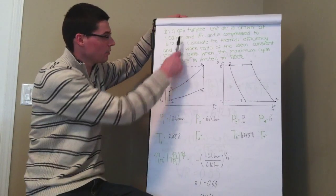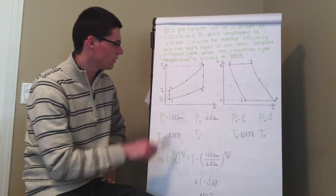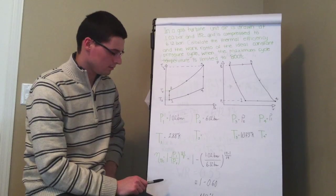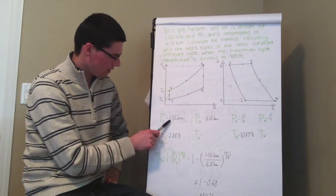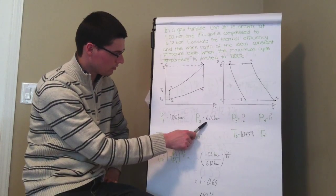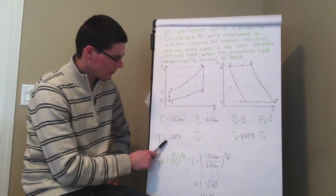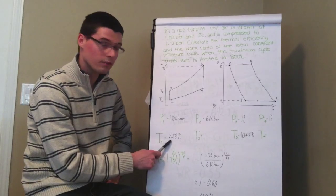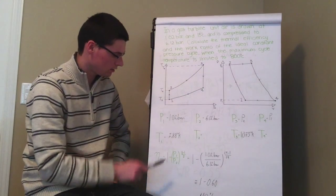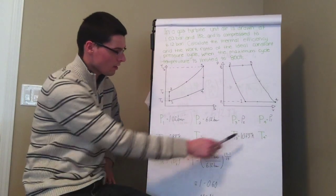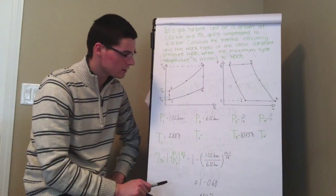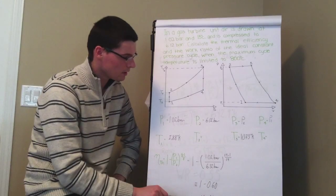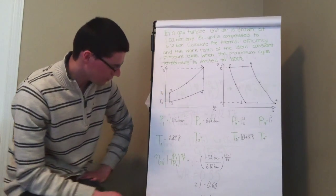So here we have an example with a gas turbine, air is being drawn in. We have it pretty much filled out here. So we have our pressure one, our pressure two, our temperature coming in 15 degrees Celsius, which is 288 degrees Kelvin. And our maximum temperature of 800 degrees Celsius being approximately 1073 degrees Kelvin.